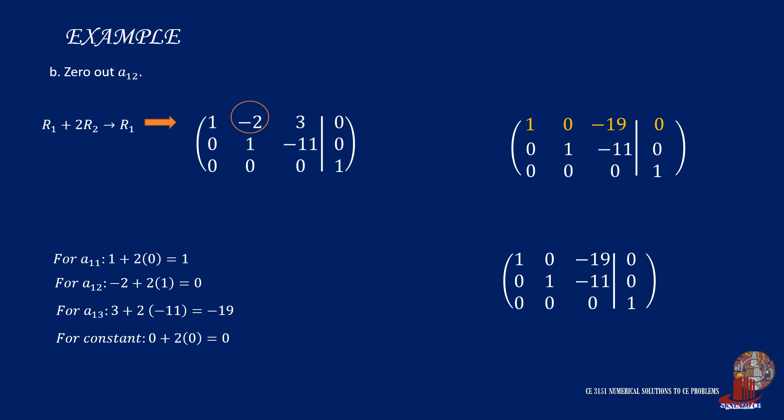Let's have a final check of the matrix outcome. Row 1 has a leading element equal to 1 at column 1. Row 2 has a leading element of 1 at the second column. From column 1, all other elements are 0 except the leading element. Similar case with row 2.